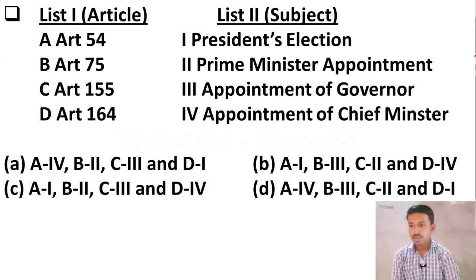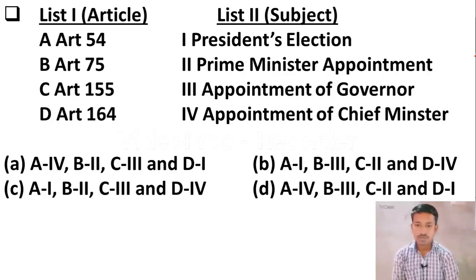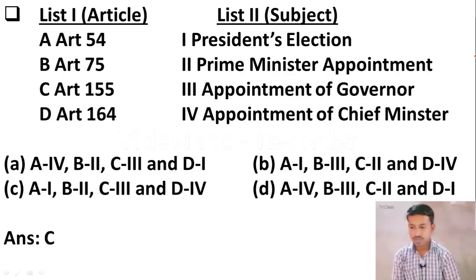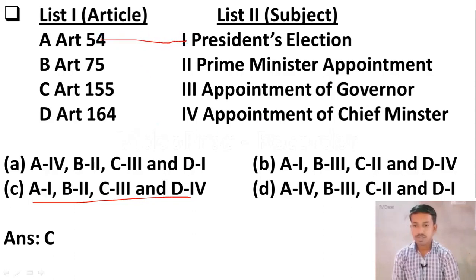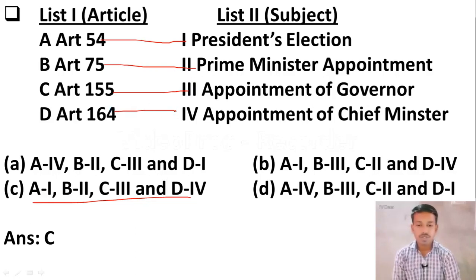Next question: Match List 1 (Articles) with List 2 (Subjects) — Article 54, 75, 155, 164 with President's Election, Prime Minister's Appointment, Appointment of Governor, and Appointment of Chief Minister respectively. The right answer is Option A. Article 54 relates to President's Election. Article 75 relates to Prime Minister's Appointment. Article 155 relates to Appointment of Governor. Article 164 relates to Appointment of the Chief Minister.